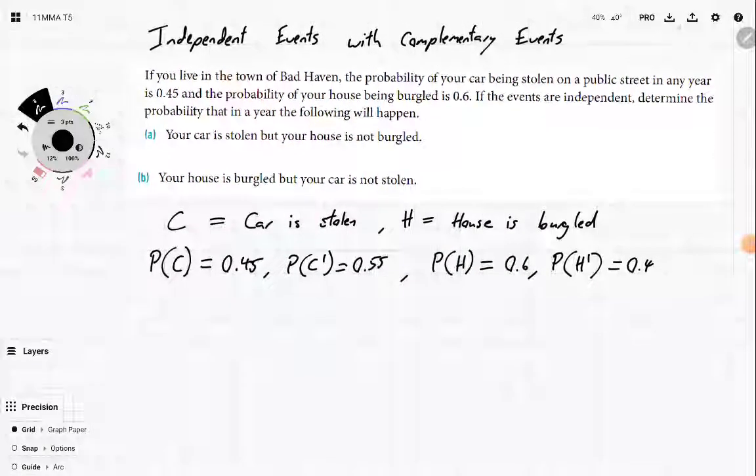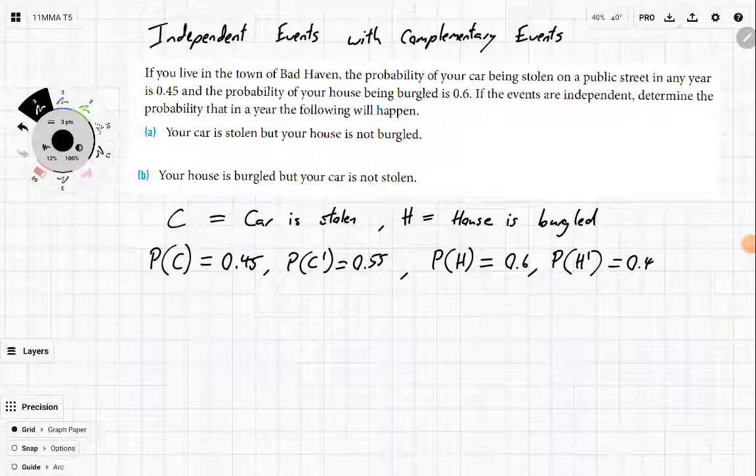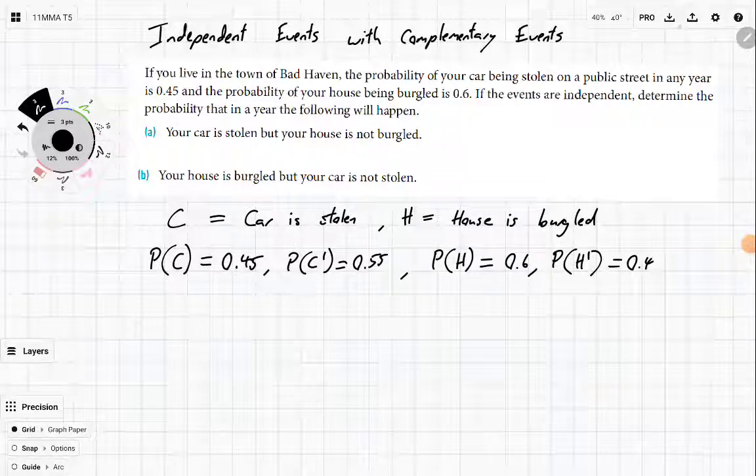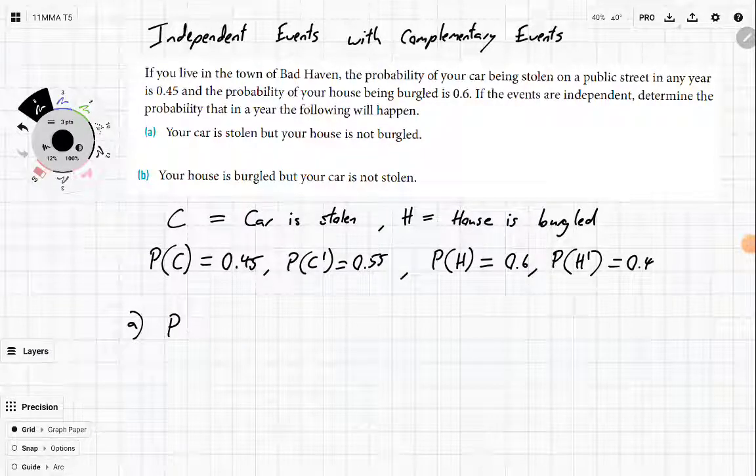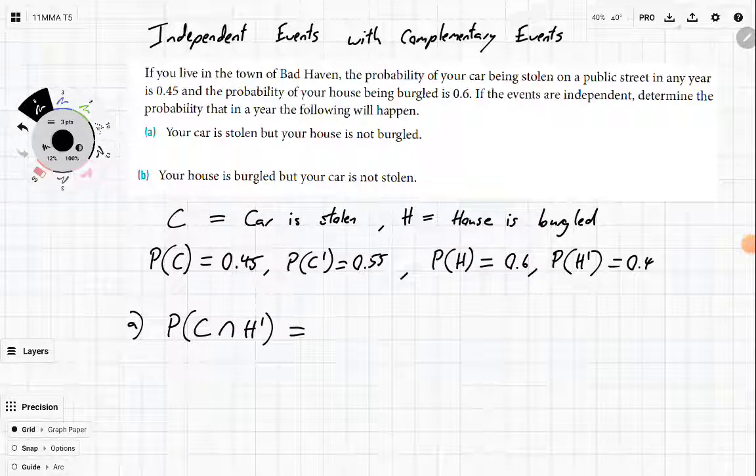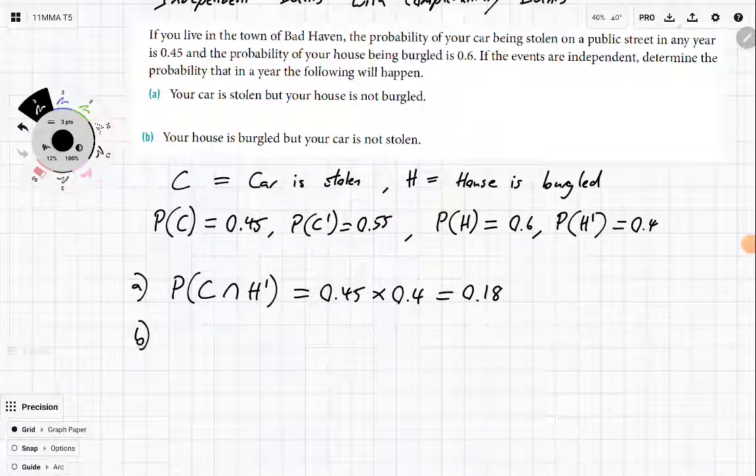Now, because these are independent events, we can use that multiplication rule. So your car is stolen but your house is not burgled. The probability that your car is stolen but your house is not burgled, so that's C and not H, is just equal to 0.45 times 0.4, which is 0.18. Because they're independent events, it means we can use this rule. If they weren't independent, we couldn't use that rule.